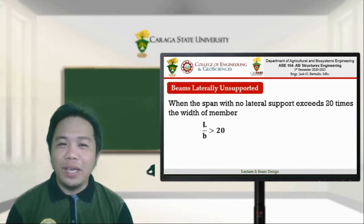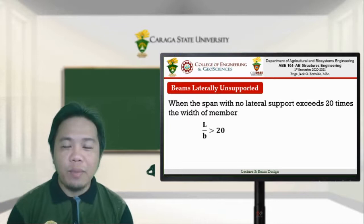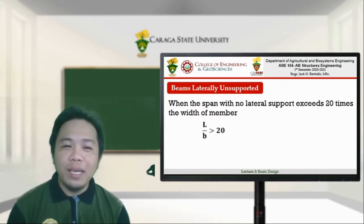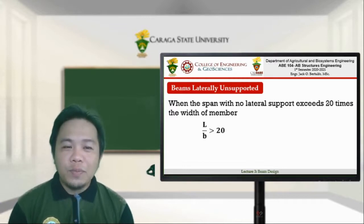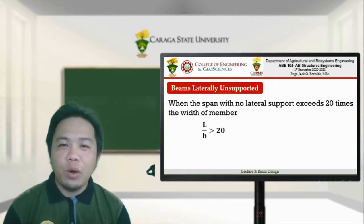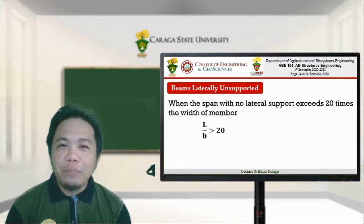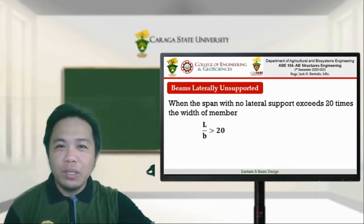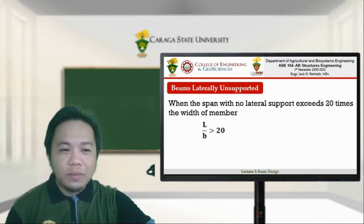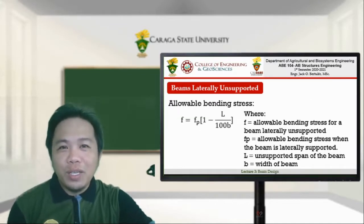When the span with no lateral support exceeds 20 times the width of the member, or using the mathematical equation l over b is greater than 20, if the span divided by the width of your beam is greater than 20, then you can say that your beam is laterally unsupported. If it is laterally unsupported, we need to adjust the allowable bending stress.